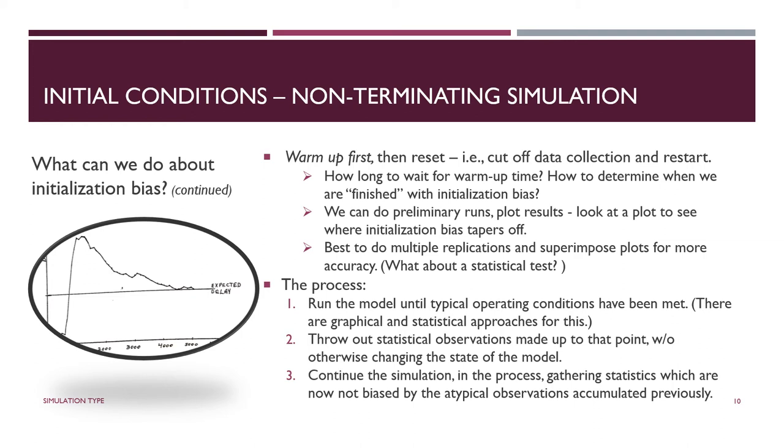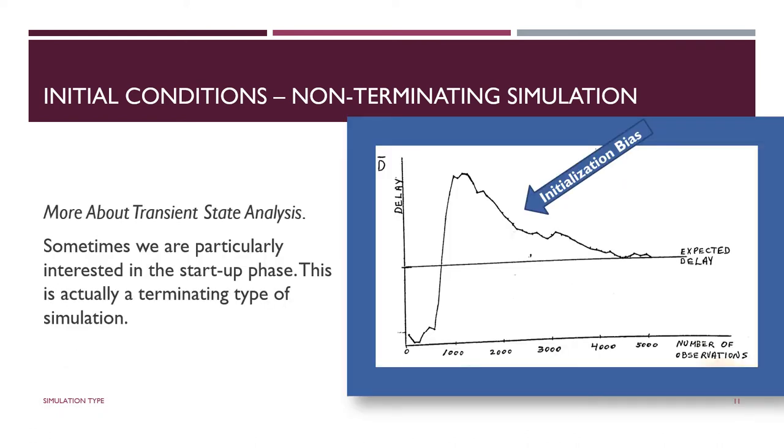And so let's see. There apparently is a process here. One, two, three. We run the model until typical operating conditions have been met. That's what we were discussing. How do we do that? But let's say we can do it. We do it. Step two, we reset, which means we throw out everything that was collected up to that point. But we don't change the state of the model because we're going to start not from empty and idle in time zero. We're going to start from now, from whenever, wherever the reset point is. And then finally, we continue the simulation, gather the statistics, and then we just have to decide on the run length, which is a different question than initial conditions. And we'll get to that.